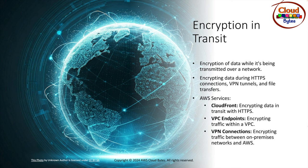VPC endpoints let you expose your data through a private IP address, meaning you talk to AWS services using a private IP within your VPC rather than going through a public IP address, NAT gateway, or the public internet. Traffic goes through the AWS backbone network, which reduces the attack surface. This is the preferred way to talk to services like S3 and DynamoDB. There are two types of endpoints: interface endpoints and gateway endpoints.